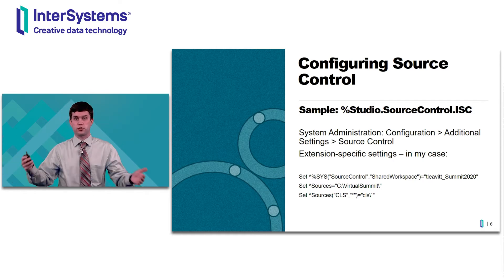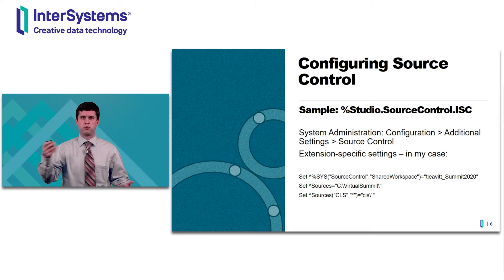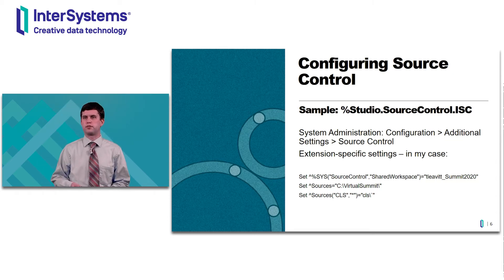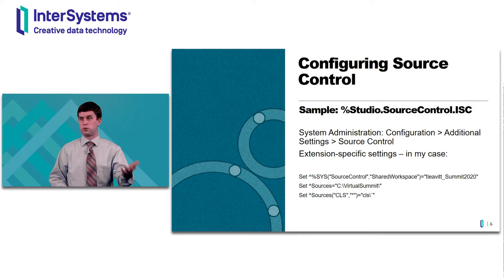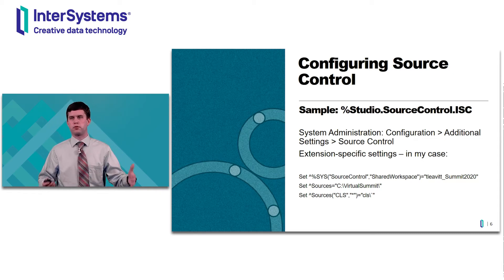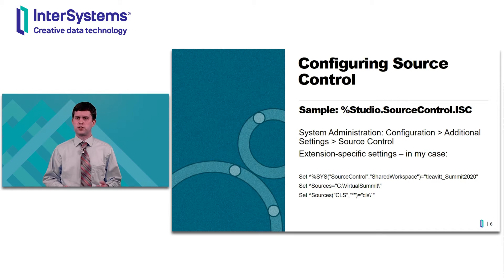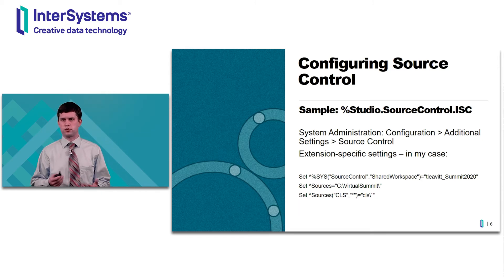For %studio.sourcecontrol.isc, you need to provide some information about where on disk the files you're editing should be exported. This is taking the files that are in the database as classes, routines, and saying the source of truth is what's on the file system instead. That source of truth on the file system could be controlled by Git or Perforce, etc. You'd set the %s source control shared workspace global to your Perforce workspace name, set the Sources global top level node to a folder on disk, and set the cls comma star subscript of Sources to a folder within that. A back tick at the end means sources will be exported as UDL.